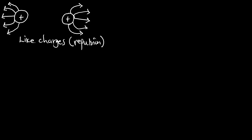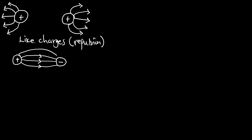Now in a different case, if we have a positive charge coming near a negative charge — unlike charges — they are going to attract. The effect always moves from the positive to the negative. The lines of force begin from the positive and end on the negative charge. This is the representation of unlike charges: they undergo attraction because they are unlike charges.